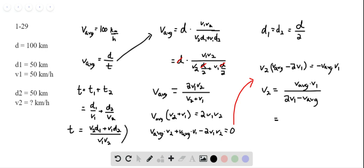Now I have V average and V1, so I can solve for this. The numerator is 100 kilometers per hour times 50 kilometers per hour. However, if I do 2 times my initial velocity, which is 50, minus my average velocity, which is 100, note this expression is 0.